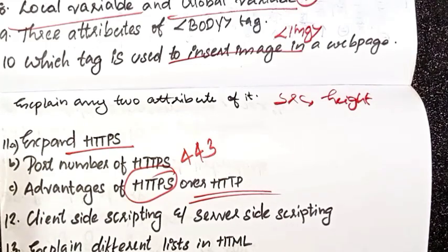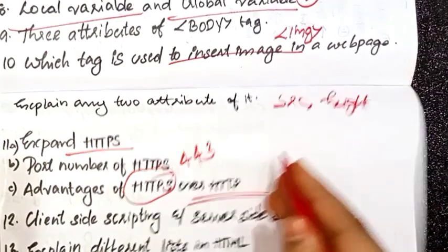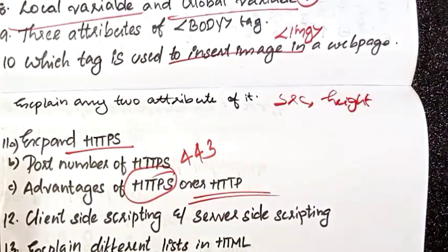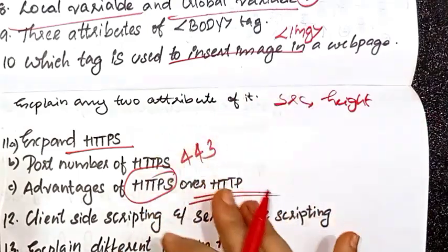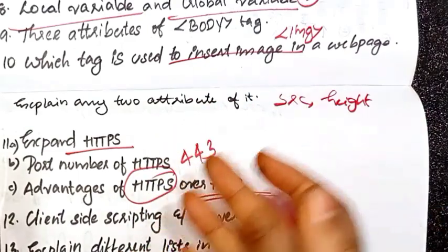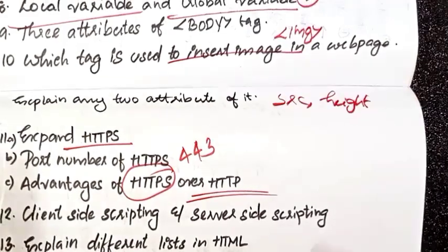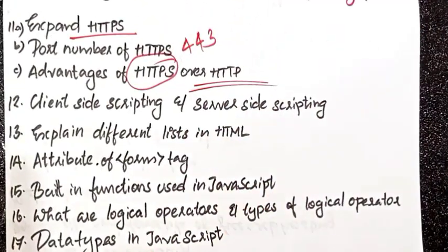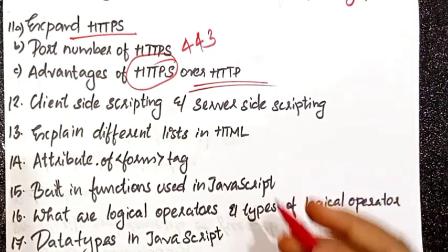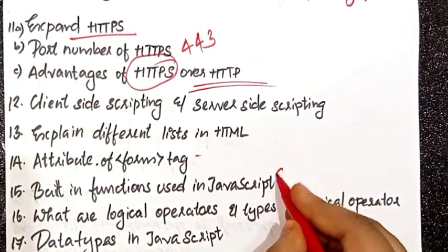Attributes of form tag — what are the attributes? The form tag attributes are: action, method, target, form control. The next one is built-in functions in JavaScript. The list of built-in functions in JavaScript.